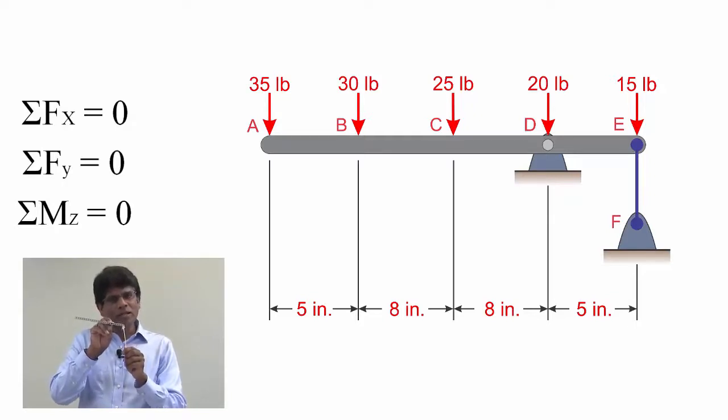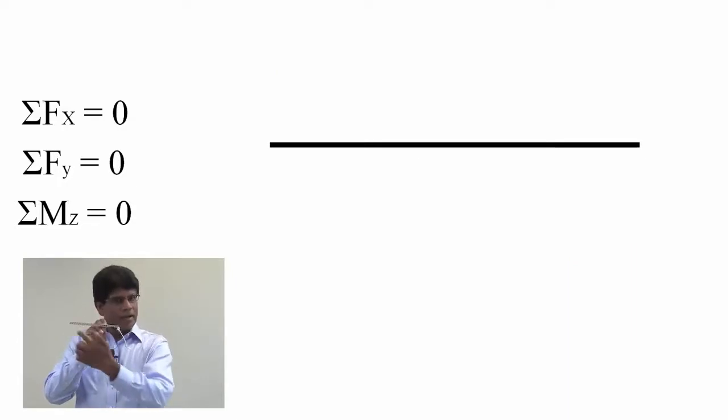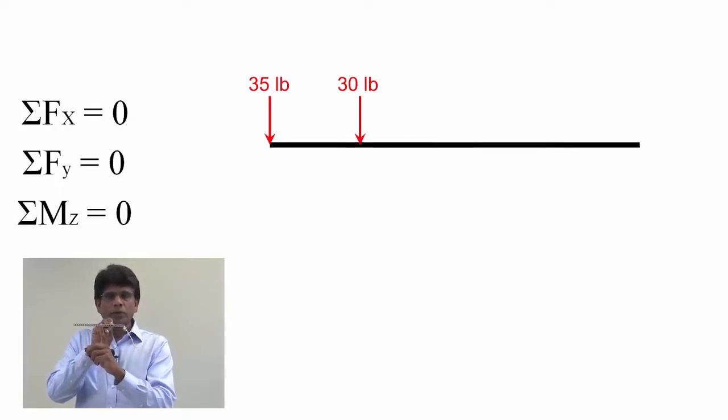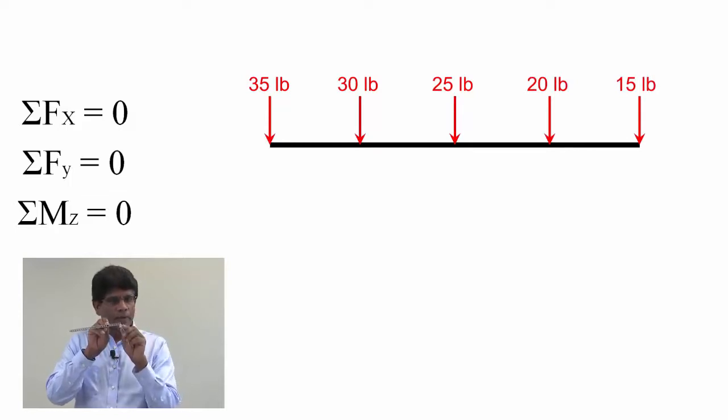With this information, we can now draw the free body diagram of this system. In this case, we will have to draw the entire beam for the free body diagram. Now I have to show all the applied forces: 35 pounds, 30 pounds, 25 pounds, 20 pounds, and 15 pounds at the appropriate locations.